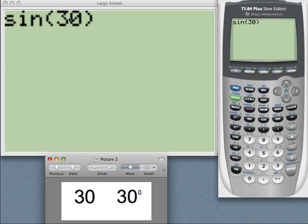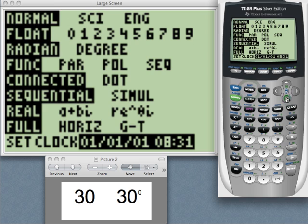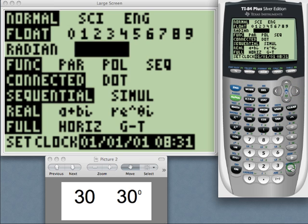This is the sine of 30 radians right now because my mode is set in radians. If I hit enter, there is my result.